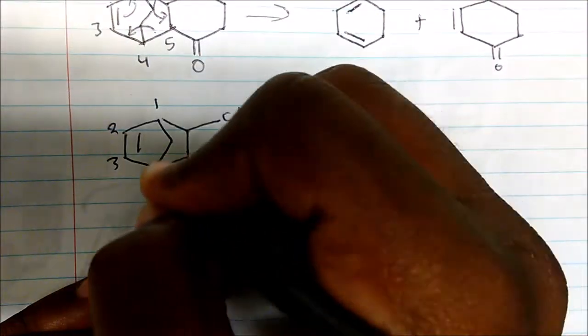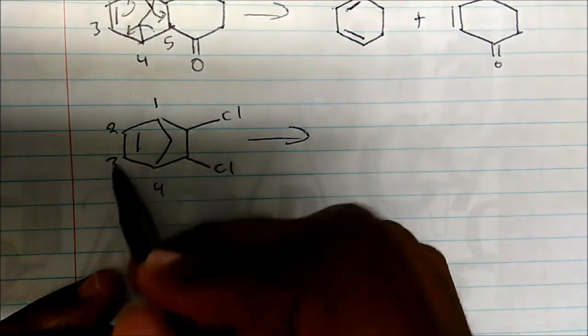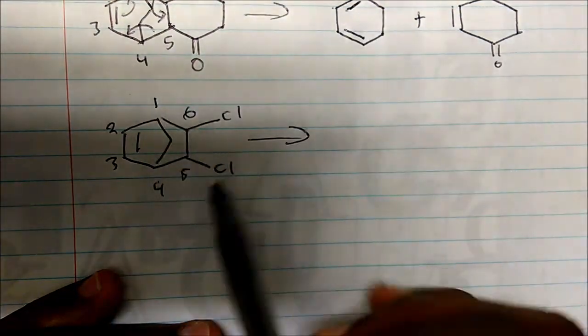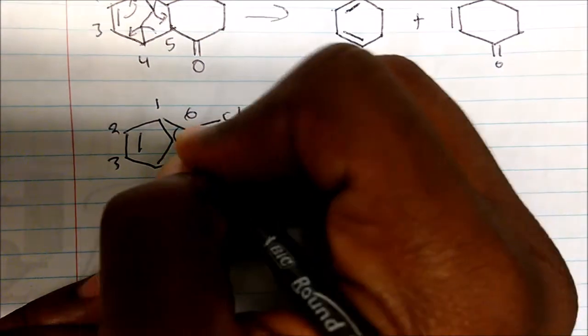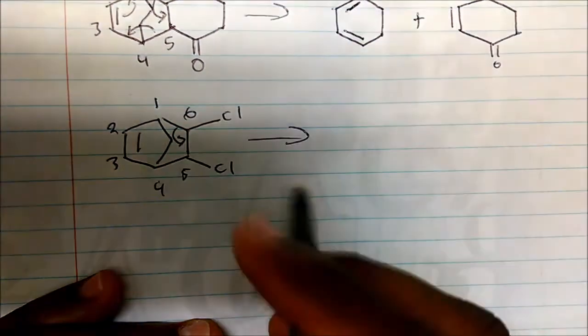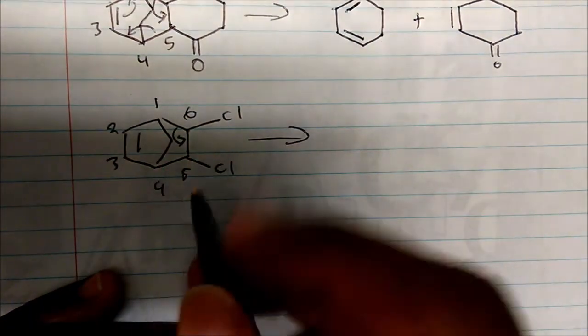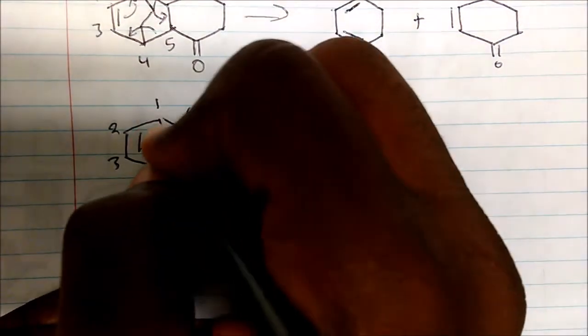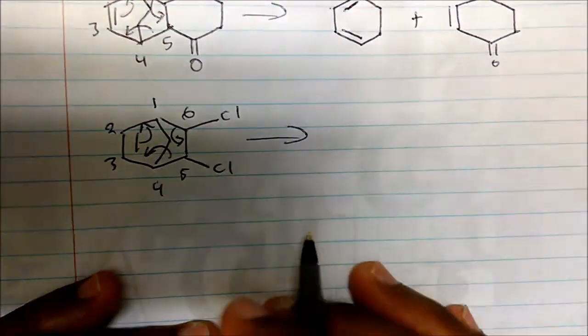What would be the starting reactants? I'm going to label my carbons: carbon one, two, three, four, five, six. In order for this reaction to occur, we know that we had to form bonds between six and one, so I'm going to break that. For this reaction to also occur, I had to form bonds between four and five, so I'm going to break that. If I break that, I have to move my double bond here.